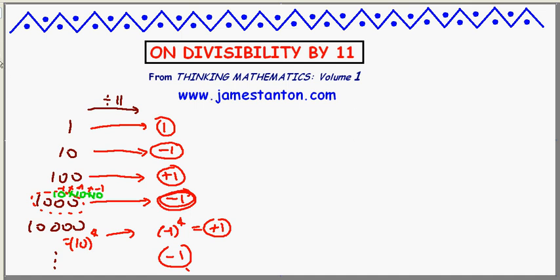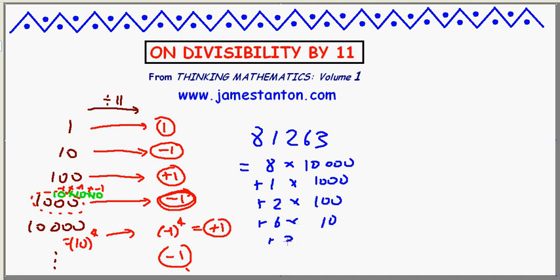Which means when I'm dealing with an actual number, and let's actually do an actual number, like, I don't know... Oops, where's my pen? Let's do 81,263. I'm going to think of this as 8 groups of 10,000, plus 1 group of 1,000, plus 2 groups of 100, plus 6 groups of 10, plus 3 groups of 1.